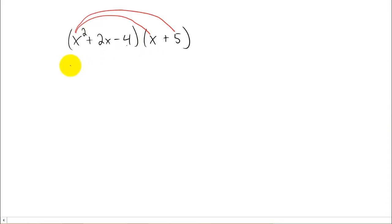x squared times x is x cubed. x squared times 5 is 5x squared. Now we're going to take the second term in the first polynomial and distribute it through the second polynomial. 2x times x is 2x squared. 2x times 5 is 10x.